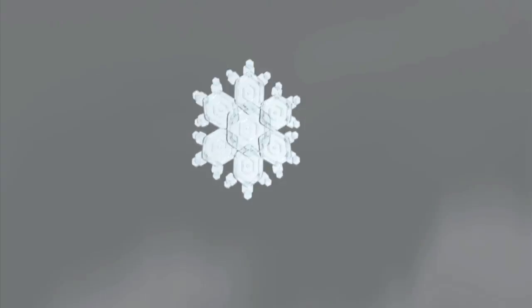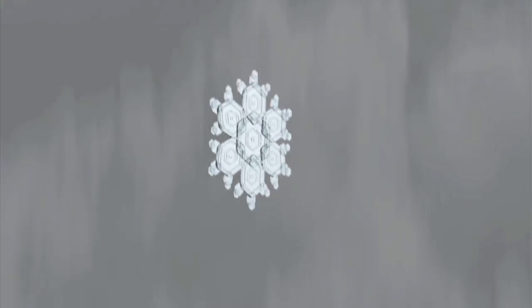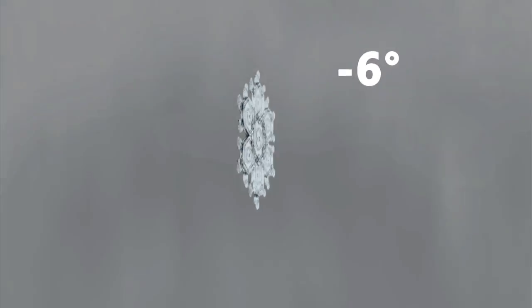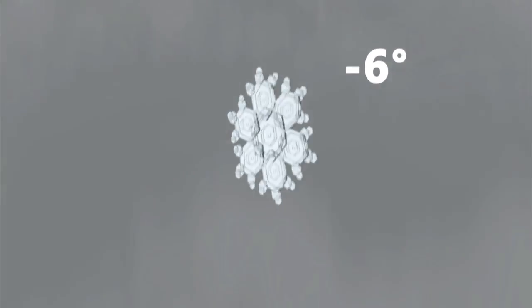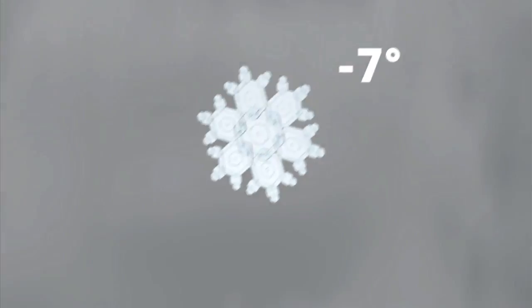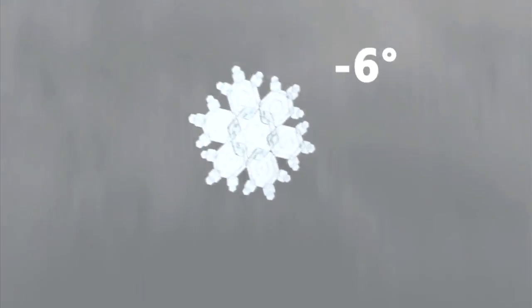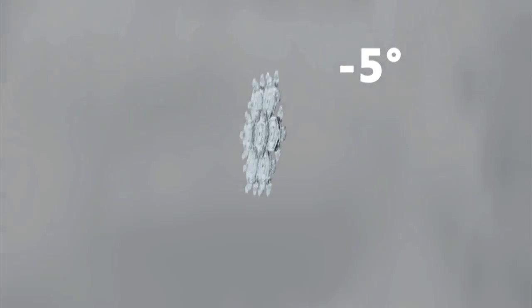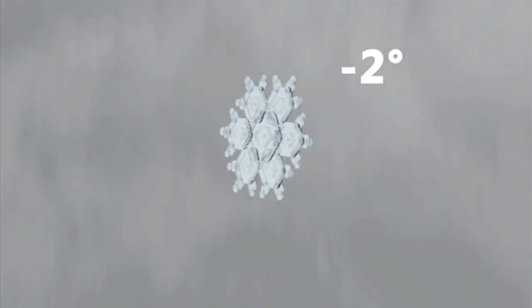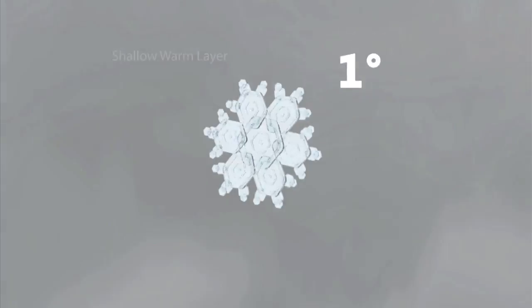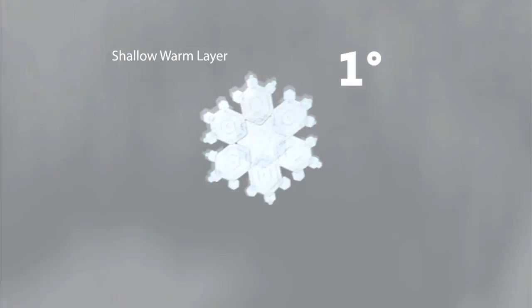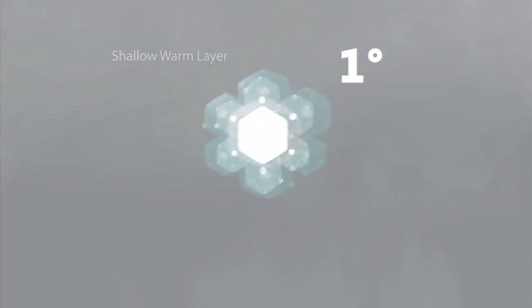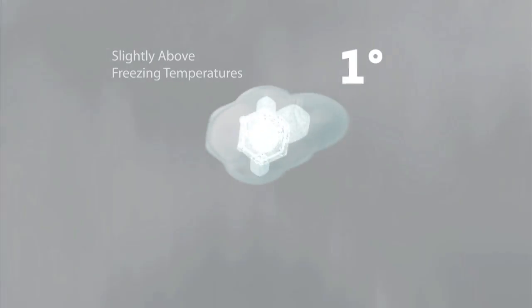It all starts as snow at the top, but the atmosphere has layers. So as the snow starts to fall, it can go into an area of warmer temperatures, slightly above freezing. Our snowflake starts to melt from the outside in, and you now have a water drop that has a little bit of an ice core in the center.